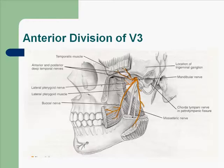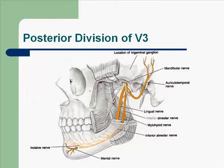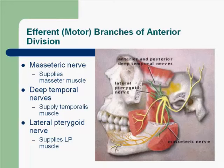The efferent or motor branches of the anterior division of the mandibular division of the trigeminal nerve include the masseteric nerve, which supplies the masseter muscle. The deep temporal nerves supply the temporalis muscle. These are motor nerves. The lateral pterygoid nerve supplies the lateral pterygoid muscle.